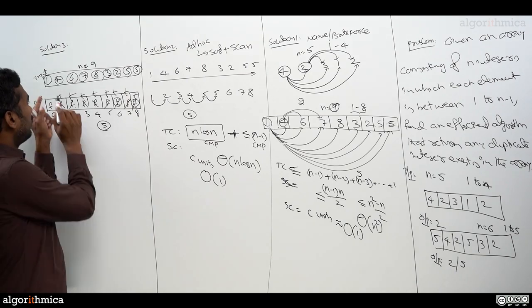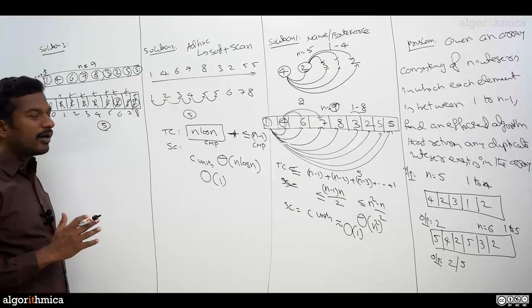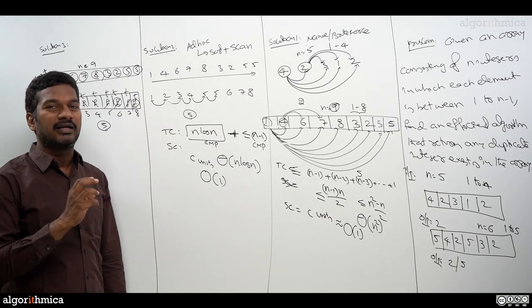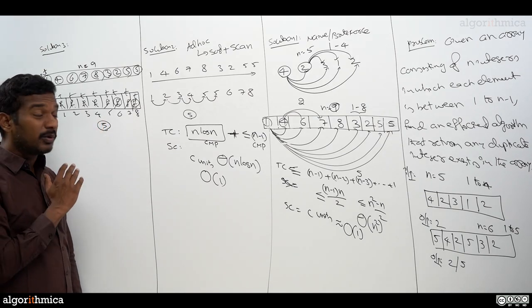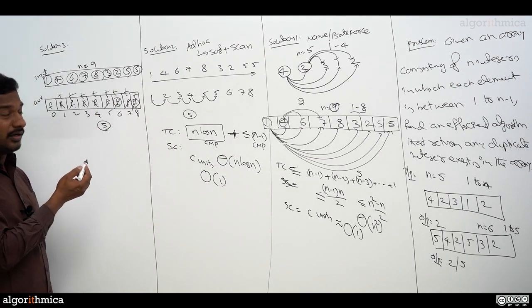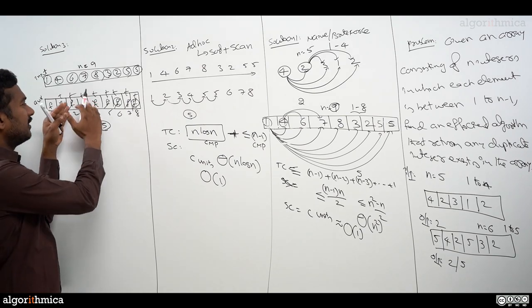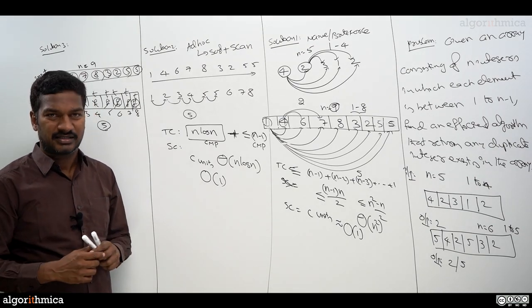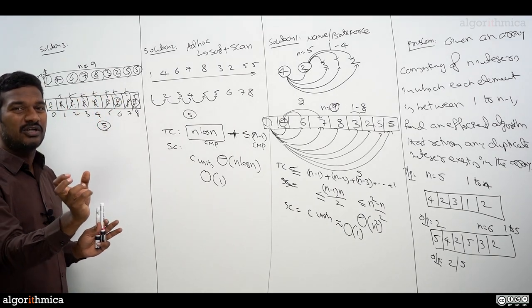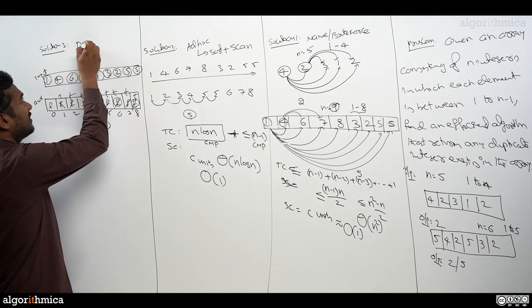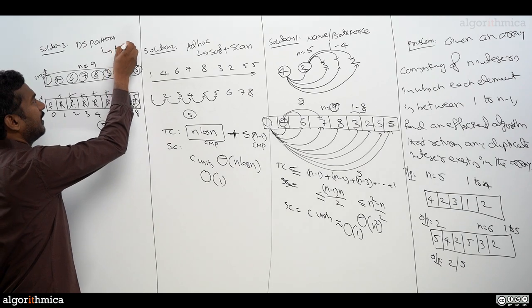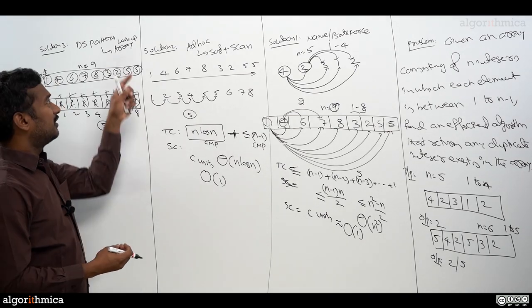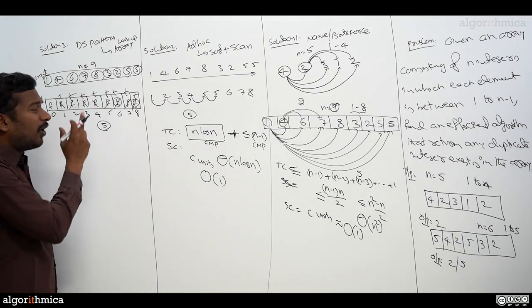By the time we finish one scan we got an answer. This might work better than the previous solutions. To make a proper comparison, let's analyze time and space complexities. What do we call this pattern? Since we're using extra space as a data structure for lookup purposes, we call this the data structure pattern — specifically, we're using an array for lookup. These are convenient labels we use to describe the approach.